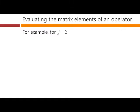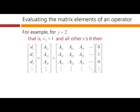Suppose that we choose j equals two, so that is c2 equals one, and all the other c's are zero. Then our vector for f would be one in which this element is one, that's c2, and all the others are zero.